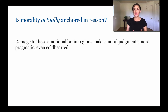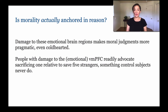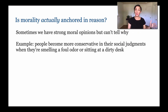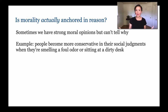Damage to emotional brain regions makes moral judgments more pragmatic, even cold-hearted. For example, people with damage to the emotional areas readily advocate for sacrificing one person to save five strangers — something control subjects would never do. Sometimes we have strong moral opinions but can't explain why. For example, people become more conservative in their social judgments when they smell a foul odor in the room or when sitting at a dirty desk. Just the smell of the environment can influence your decisions, and you are completely unaware that this is happening.